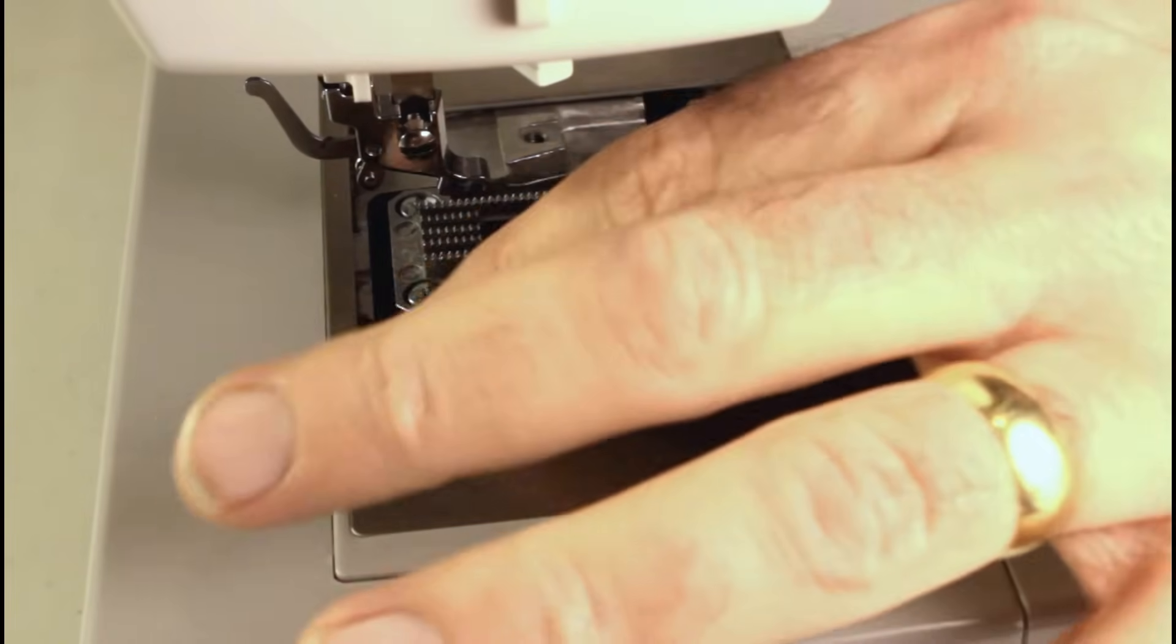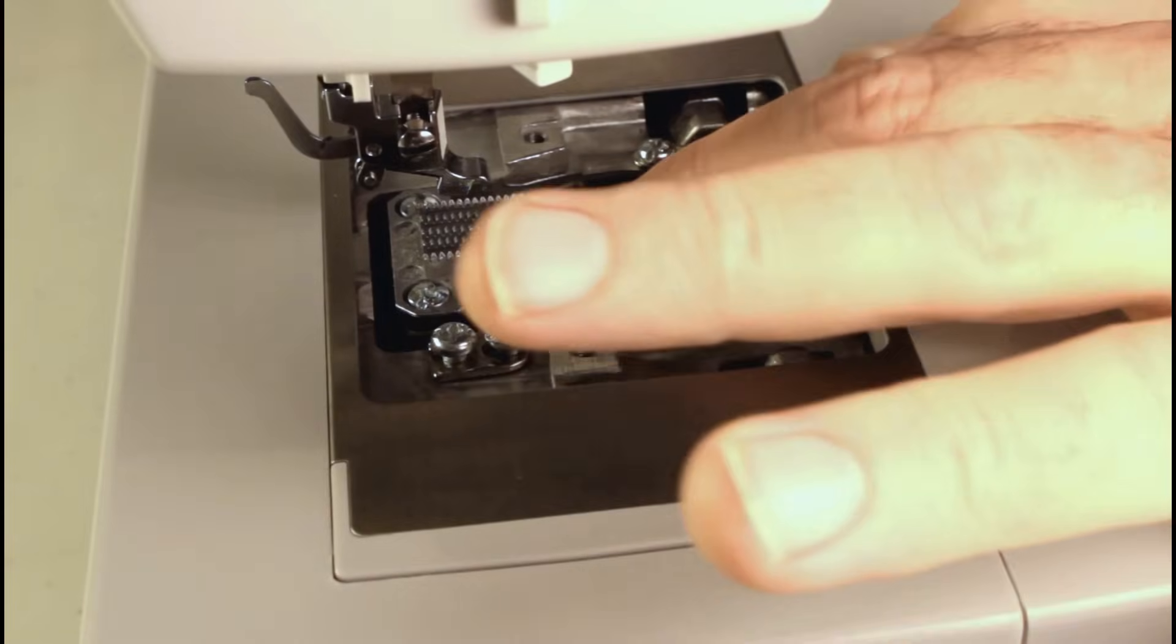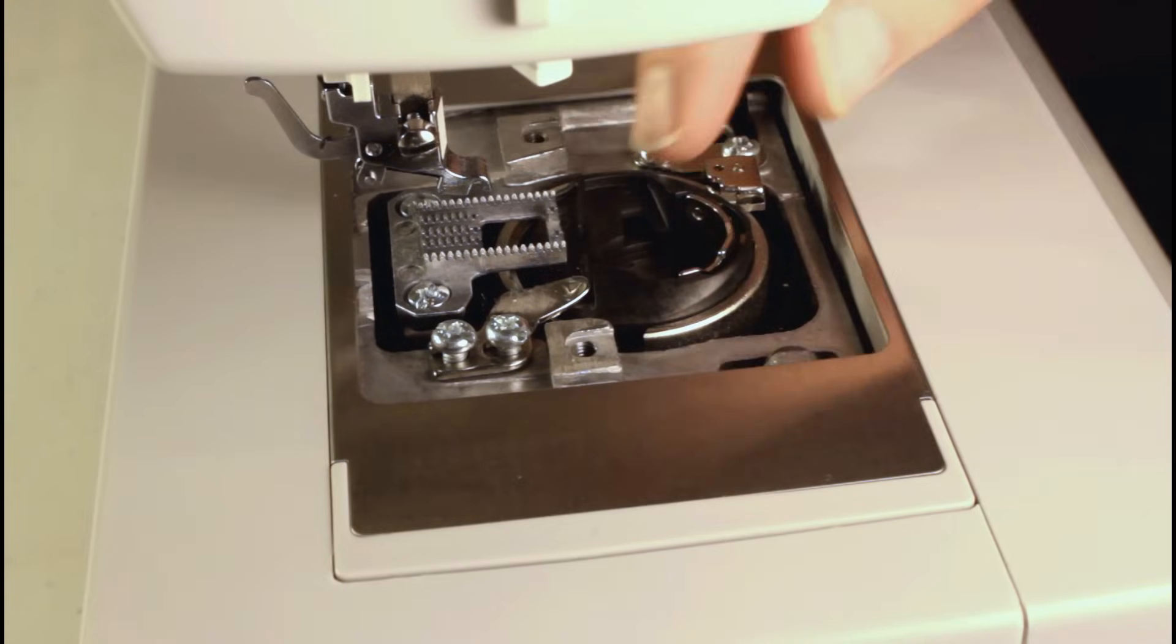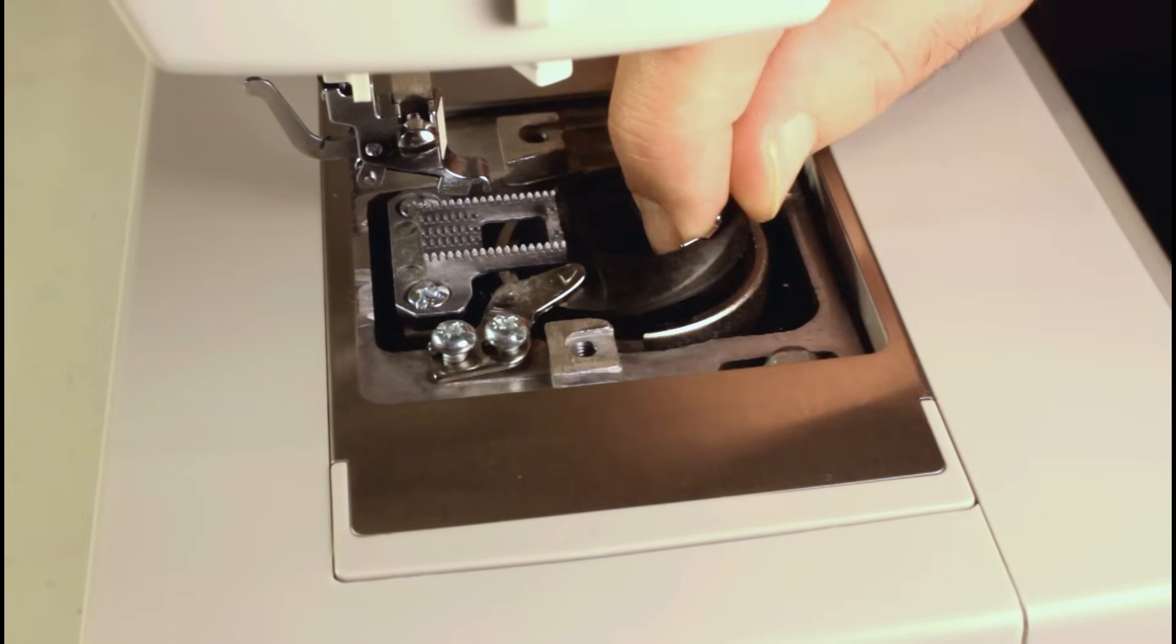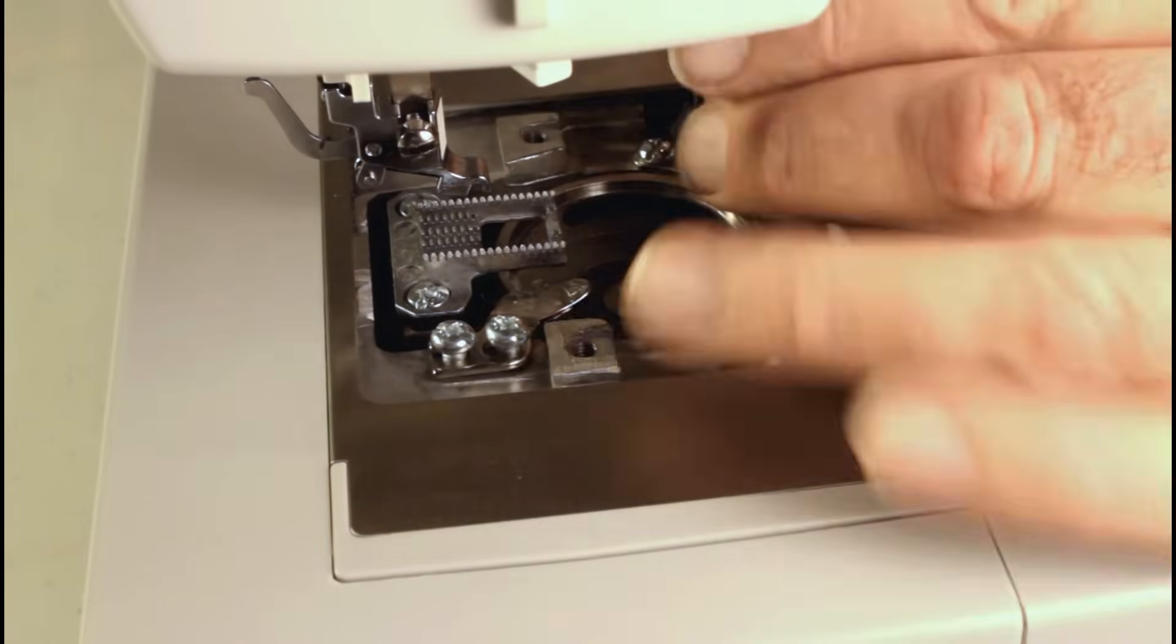Once you get them loose, you don't have to take them all the way out. We just want to loosen. There's a little bar here that holds the bobbin case in and that's because this machine sews at such a high speed. It keeps everything steady. Once you get it loose, you can pull the bobbin casing out.